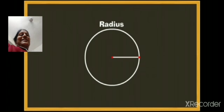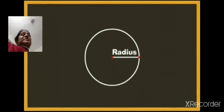So what is the radius? It is the distance between the center of the circle and any point on the circumference.